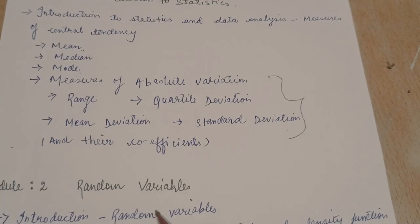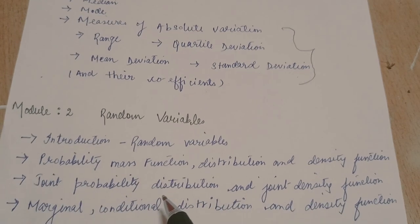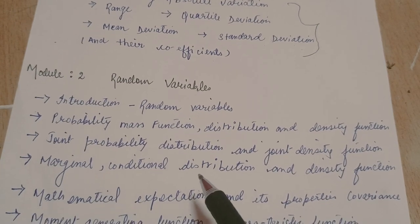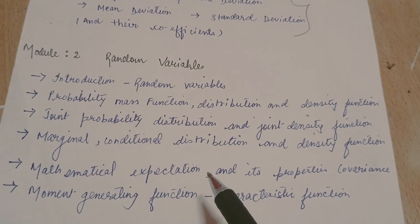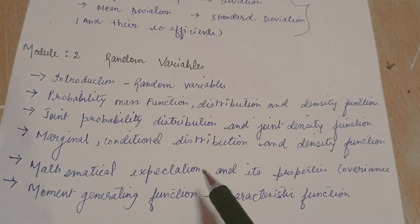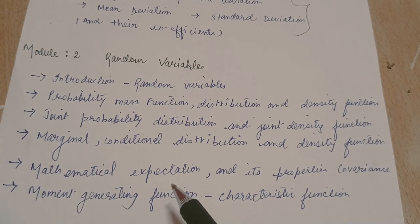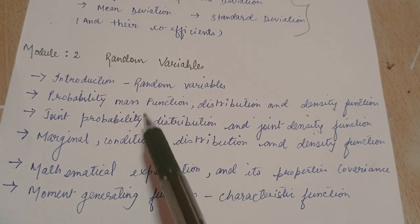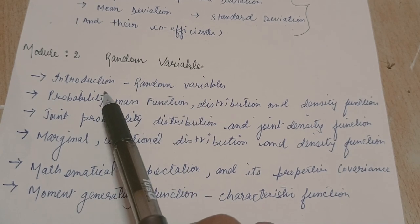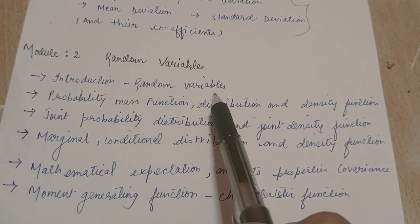Then we move on to module 2, that is random variables. This module can confuse you if you don't understand the topic, but don't you worry, I'm there for you. I'll make it easy for you. So module 2 is random variables. The first topic under it is introduction to random variables.